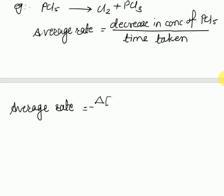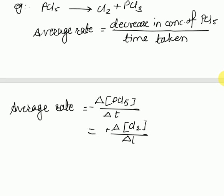The average rate equals the positive delta concentration of PCl3 upon delta t, or equals to the positive delta concentration of Cl2 upon time, or it can equal the delta concentration of phosphorous pentachloride. The plus sign indicates increasing concentration of product and the negative sign indicates decreasing concentration of reactant, that is phosphorous pentachloride.